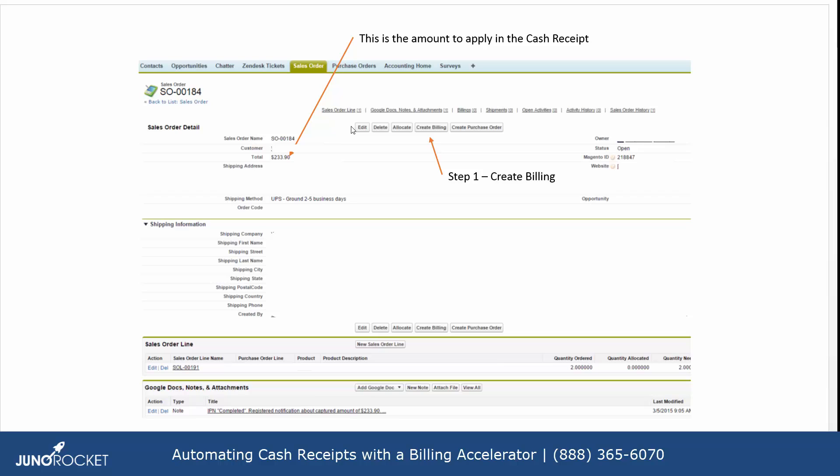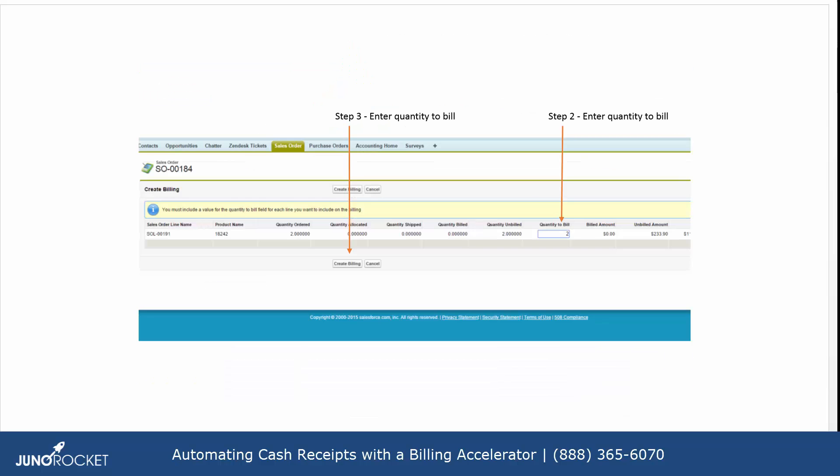There is a total outstanding on this sales order and the first thing a person would do in order to receive a payment is click on Create Billing. The next step in this process would be to enter the quantity that is billed and then create the billing as shown there.